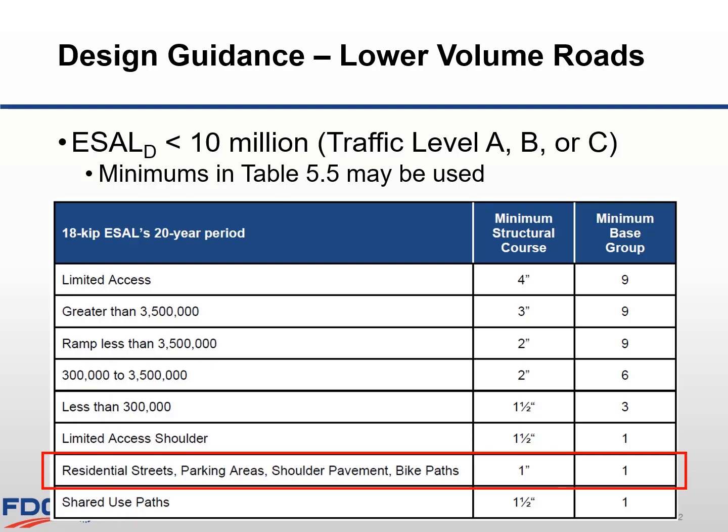Oftentimes, the pavement evaluation process will indicate that the shoulder was stabilized during the original construction of the road, and additional stabilization is therefore not needed. However, if there is not existing stabilization under the shoulder, you will need to determine the type of materials in the embankment and evaluate the need for increasing the shoulder base and structural course.